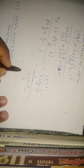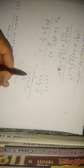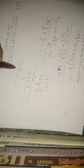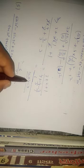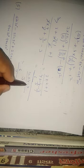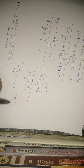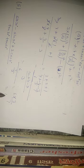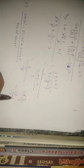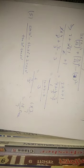ऊपर तो बच गया 6। नीचे: 12 और 4 = 16, minus 9, बचेगा 7। तो नीचे में 3 — यानी 7 upon 3 — इसको ऊपर लेके आएंगे तो reciprocal होगा। 6 into 3 upon 7 equals to 18 upon 7। यह answer है। Thank you। बचे हुए questions वो आपको खुद से solve करने हैं — इस exercise के बाकी questions आप खुद solve करें।